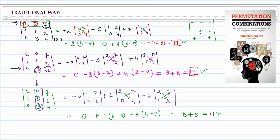So you can see we get the same value by solving along any row or any column. We need to take care of the virtual sign pattern — the alternating plus and minus signs when moving horizontally or vertically. If you move diagonally, you get the same sign with no change. This was the traditional way of finding the value of a determinant.